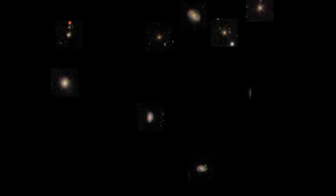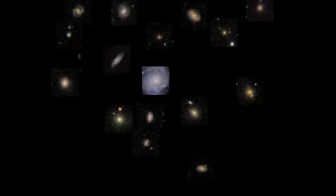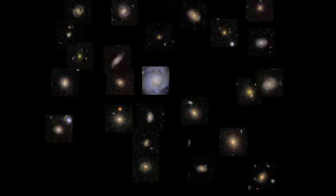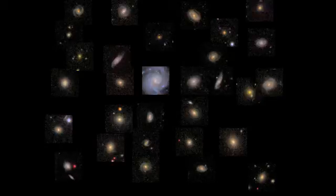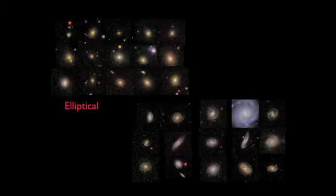These galaxies come in lots of different shapes and sizes. These are images of just a few of them. We can broadly categorize these into two different categories: we call them spirals and ellipticals.